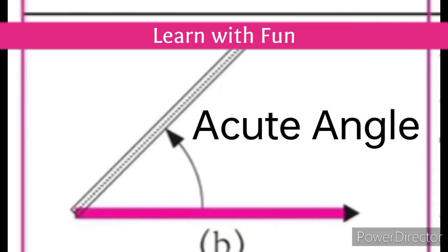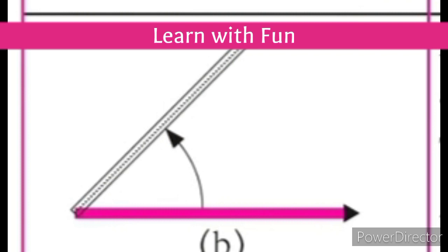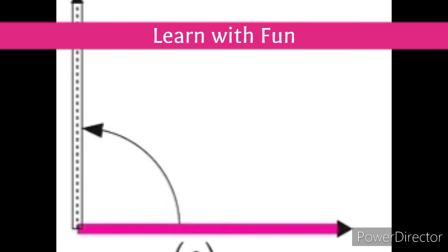Our second type is acute angle. It is more than zero degree but less than 90 degrees. An angle whose measure is greater than zero but less than 90 degrees is called an acute angle. In the figure, the measure of the angle is near about 40 degrees. It is an acute angle.